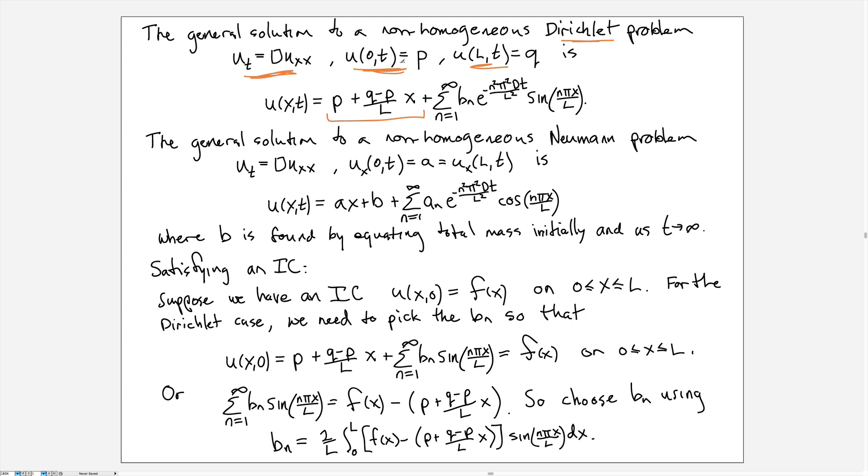If I plug in 0 here, I get p back, and 0 here gives me sin(0), so all of these disappear and I'm just left with p. If I plug in L, I would get the L's here canceling and then the p's canceling, being left with q. When I plug in L here, I get sin(nπ) for all of these, that's 0, so all I'm left with is q. So I satisfy the boundary conditions, and here I have a whole bunch of arbitrary constants that will help me solve the initial value problem.